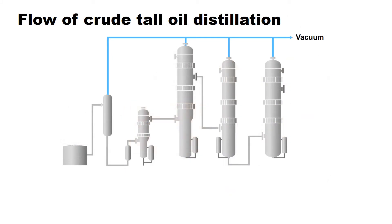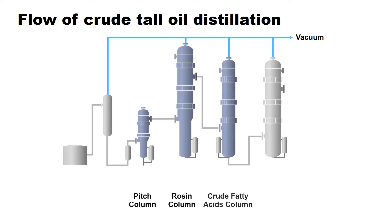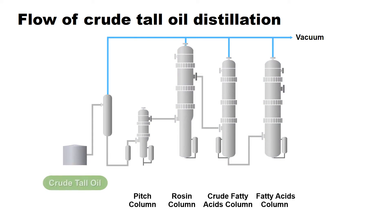The distillation plant consists of four columns: the pitch column, the rosin column, the crude fatty acids column, and the fatty acids column. After dehydrating crude tall oil in the dehydrator, the high boiling point pitch is separated from crude tall oil in the pitch column.